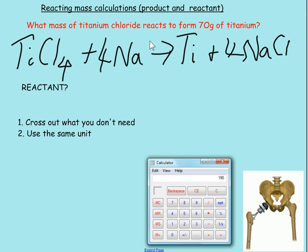Right, so we've got what mass of titanium chloride, this thing here, reacts to form 70 grams of titanium, which is this thing here. So they're asking you the mass of the reactant, because these are the reactants and these are the products.